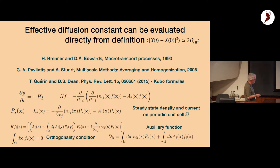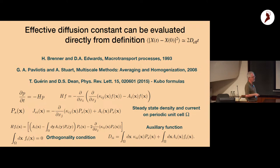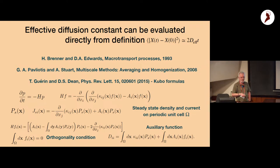You have to solve an ordinary partial differential equation — no time dependence — for this auxiliary function, with an orthogonality condition. Once you've computed it, you perform two integrals and find the effective diffusion constant. This formalism is quite powerful, and in one dimension you can solve everything analytically.